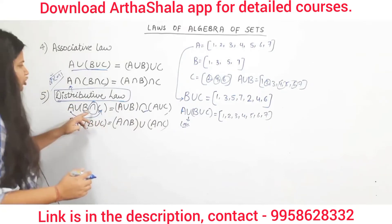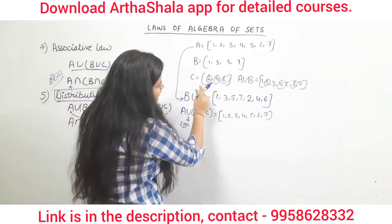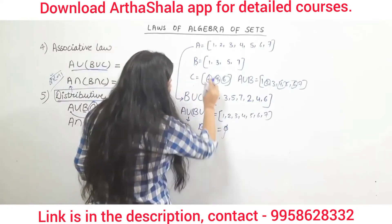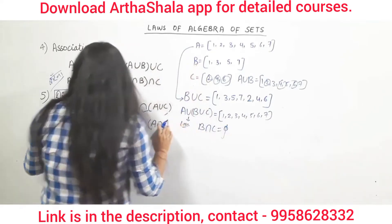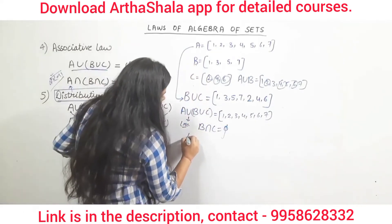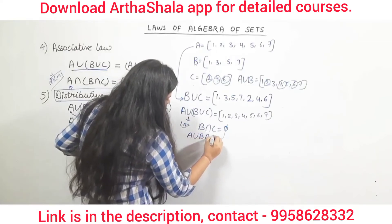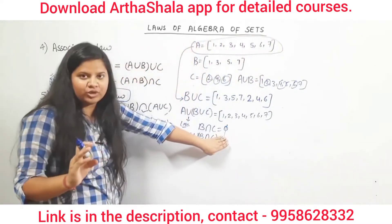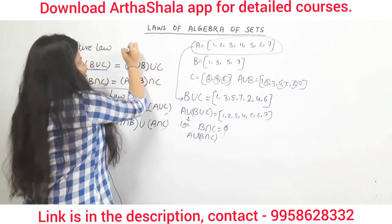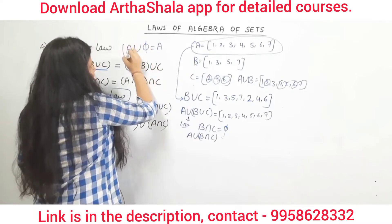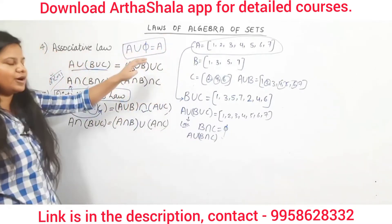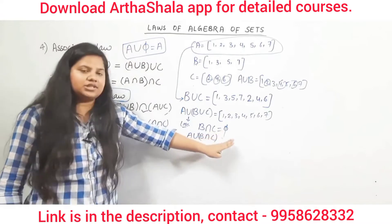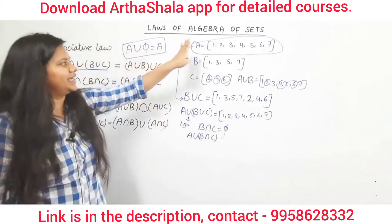That is the only difference here. So for B intersection C — if we do B intersection C, nothing will happen because there is no common element, so the result is Φ. Then if we do A union Φ, our whole set A will repeat unchanged. Here we use the identity law property: A union Φ equals A.